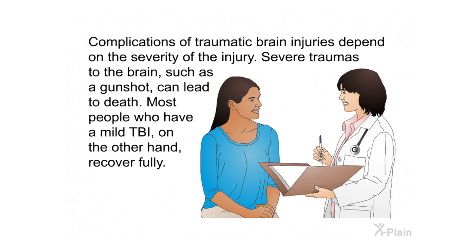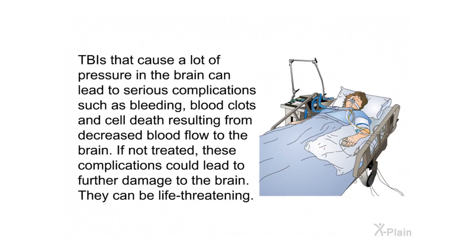Complications. Complications of traumatic brain injuries depend on the severity of the injury. Severe trauma to the brain, such as a gunshot, can lead to death. Most people who have a mild TBI, on the other hand, recover fully. TBIs that cause a lot of pressure in the brain can lead to serious complications such as bleeding, blood clots, and cell death resulting from decreased blood flow to the brain. If not treated, these complications could be life-threatening.